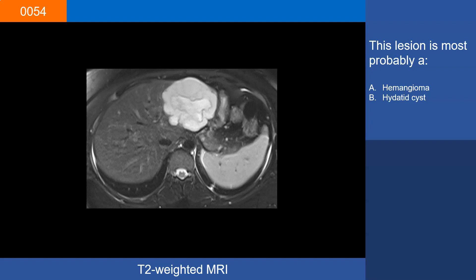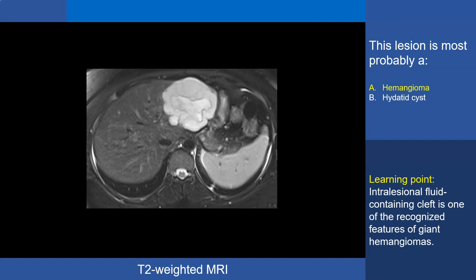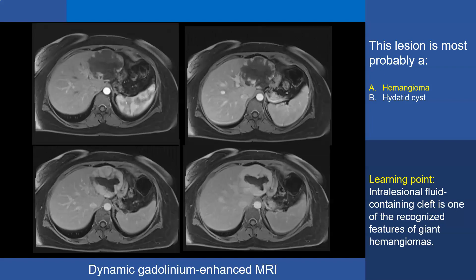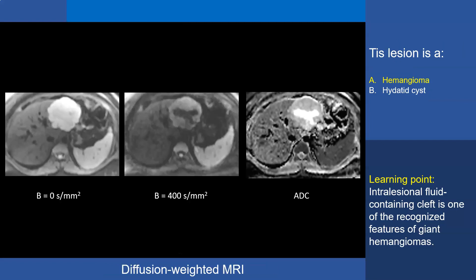Case 54. This lesion is most probably A, hemangioma, or B, a high-dated cyst. The correct answer is A, hemangioma. On this T2-weighted image we see a giant hemangioma with a central cleft. Unlike the rest of the hemangioma, which is composed of intravascular spaces containing blood, the central cleft is not communicating with the bloodstream and contains only fluid. Therefore, it is not enhancing on gadolinium-enhanced MRI and shows more facilitated diffusion than the rest of the hemangioma. The learning point is that an intra-lesional fluid-containing cleft is one of the recognized features of giant hemangioma.